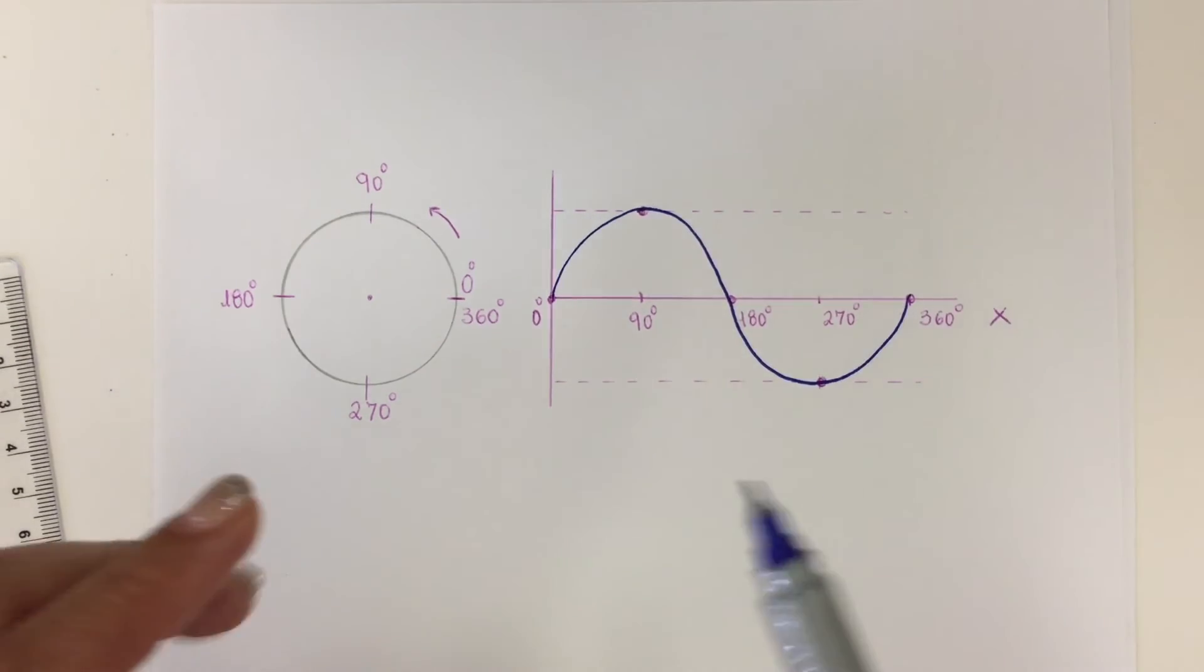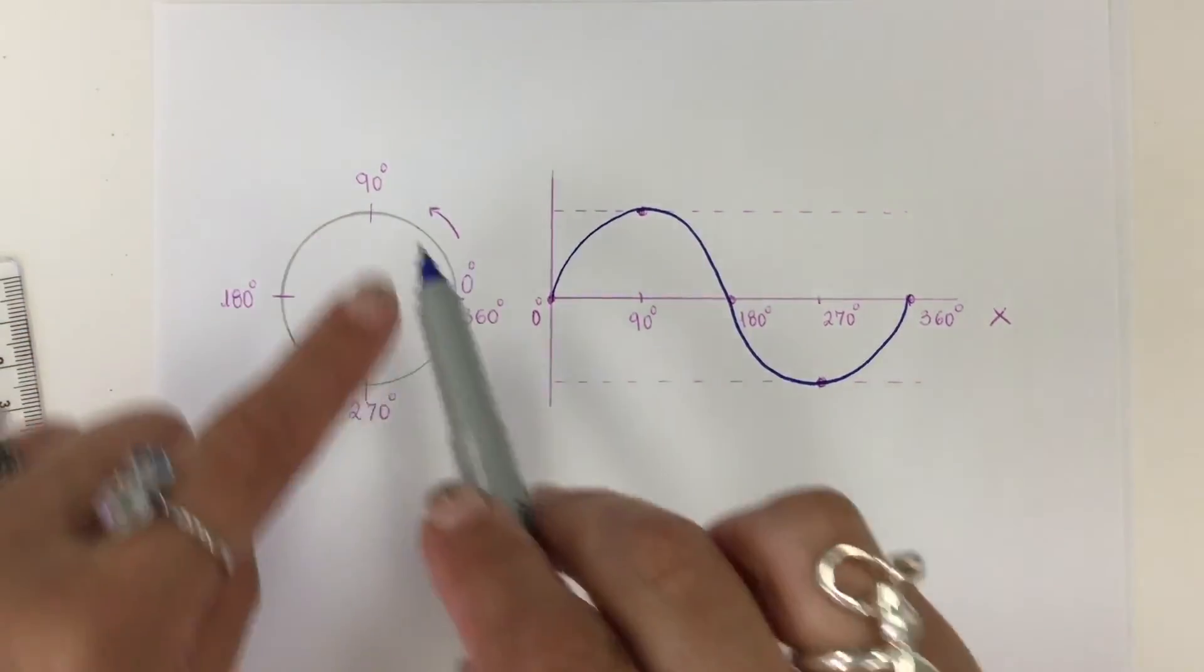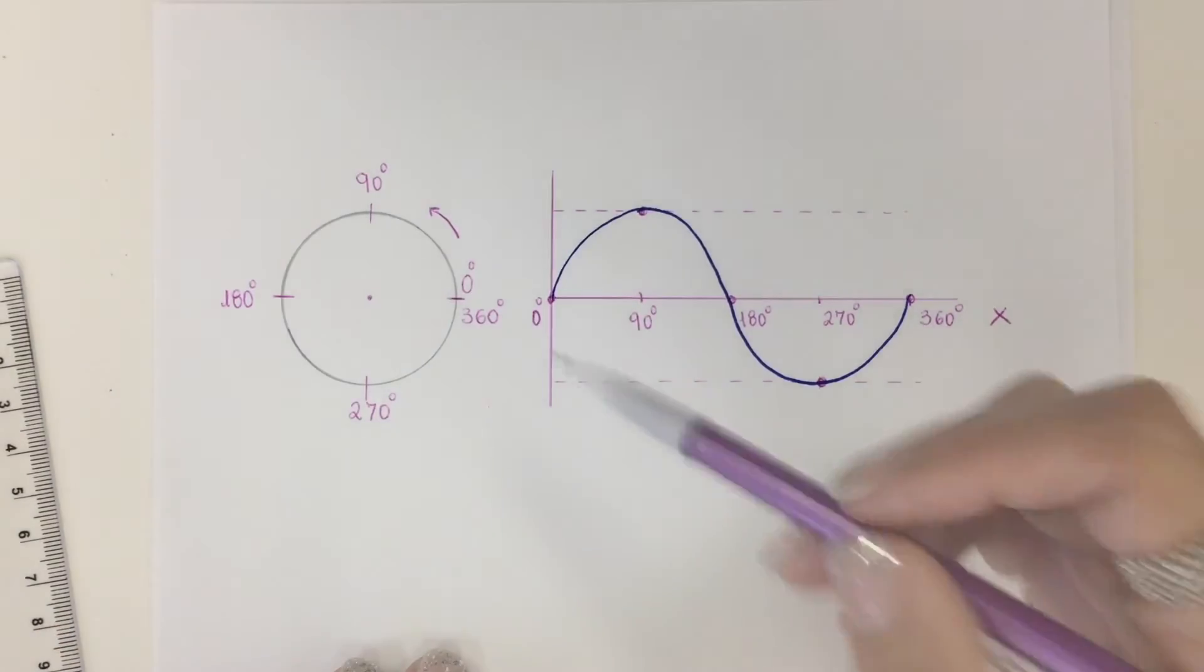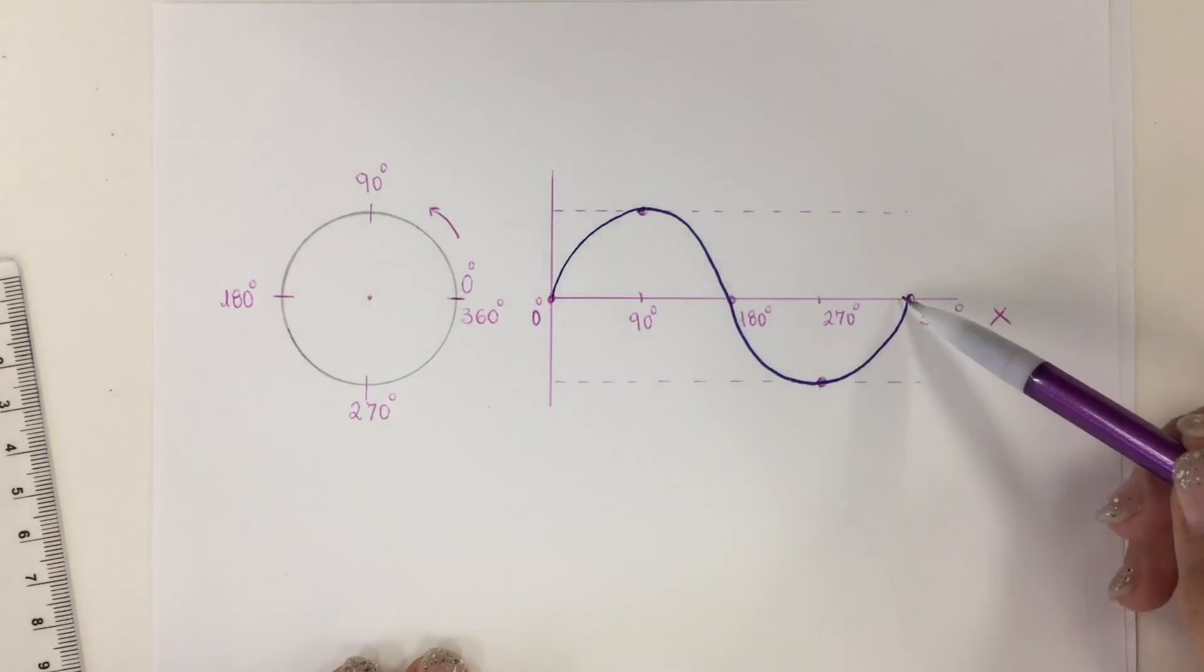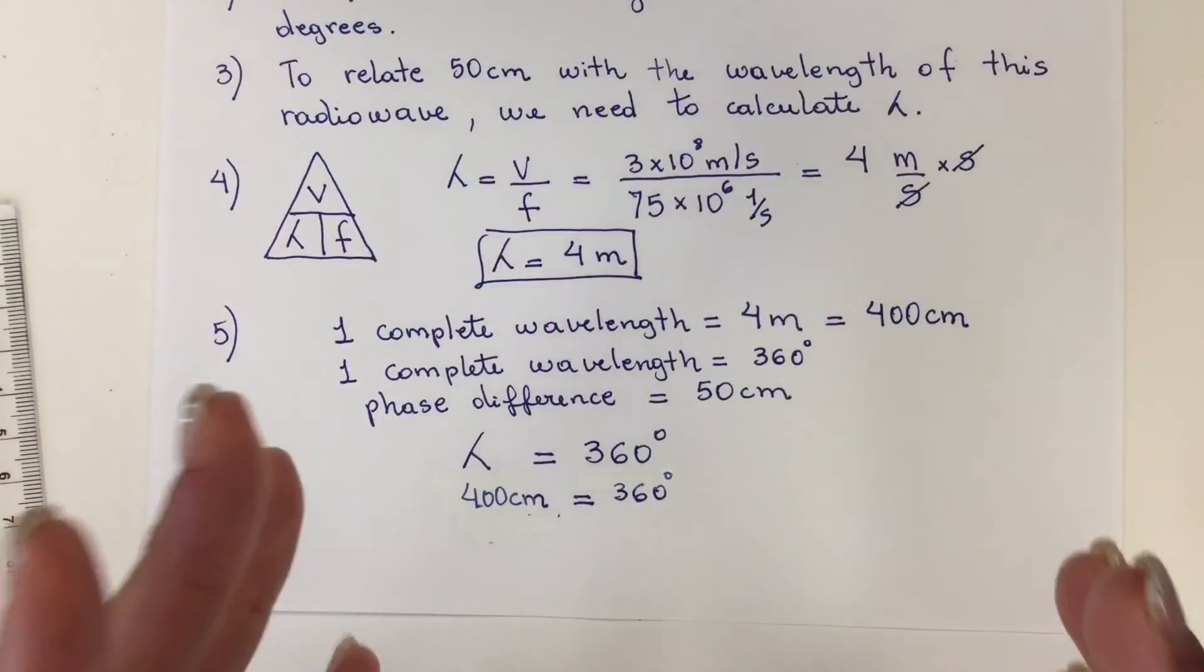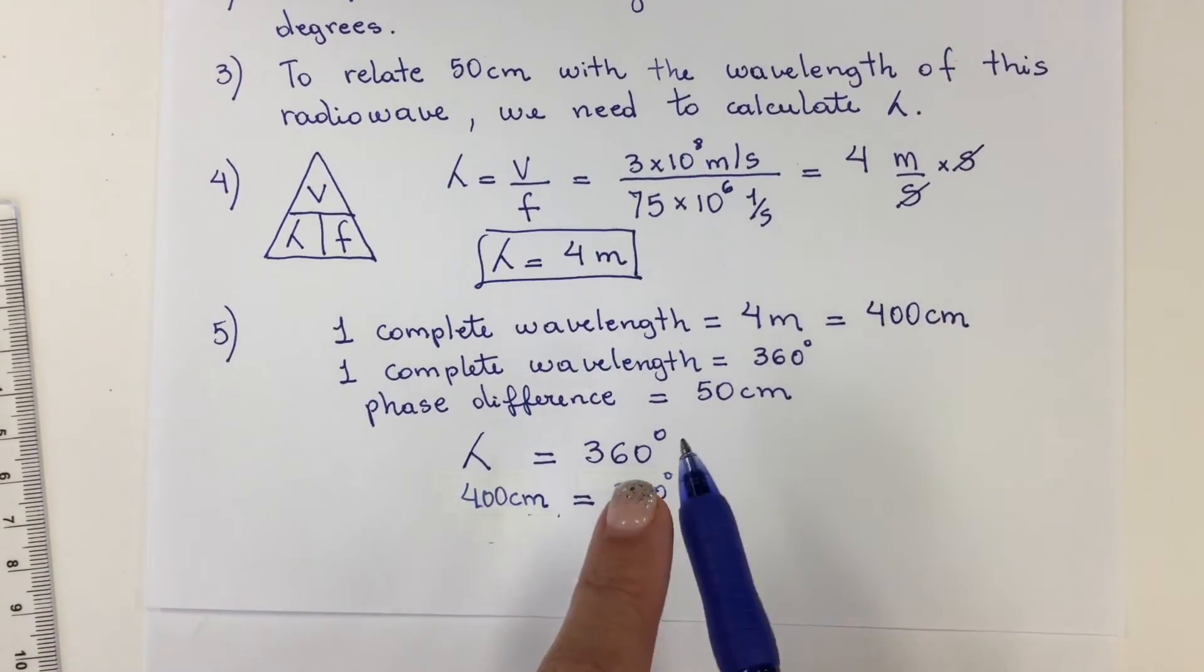That way I have converted the degrees in circular form into a waveform. One complete wavelength corresponds to 360 degrees. Now that I have explained this statement, a wavelength is equal to 360 degrees.